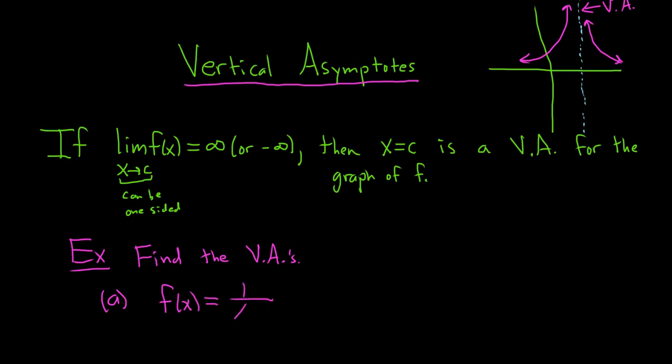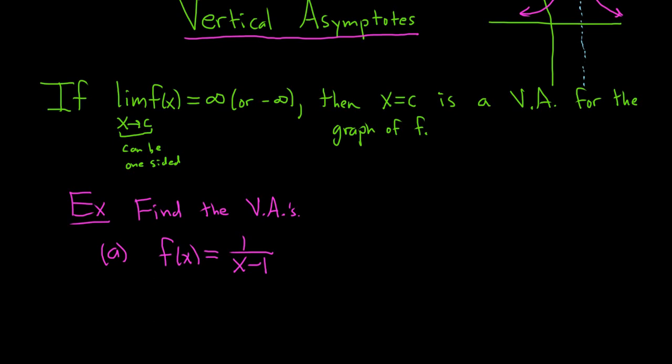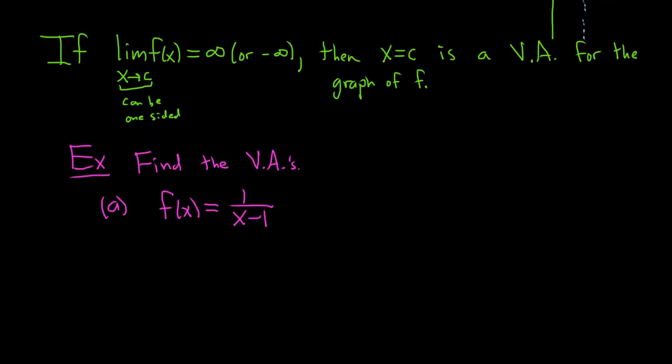Let's do a really simple example: f(x) equals 1 over x minus 1. If you remember from algebra or pre-calculus, whenever you have a rational function like this, when you're finding vertical asymptotes what you do is simplify first, and then you set the bottom equal to zero. Then you solve for x and so you get 1, and that is the answer.